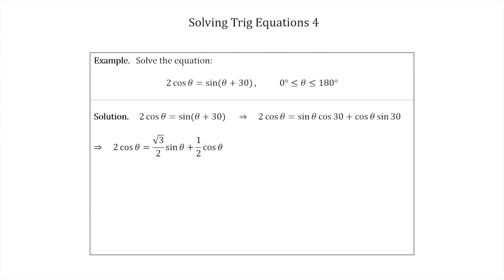Now we've got 2 cos θ on one side and 1/2 cos θ on the other. Let's take that 1/2 cos θ across - it becomes minus 1/2 cos θ. So you get 2 cos θ minus 1/2 cos θ equals 3/2 cos θ. That equals √3/2 sin θ on the right-hand side. Now let's try and get our cos θ and sin θ on the same side and our numbers on the other.